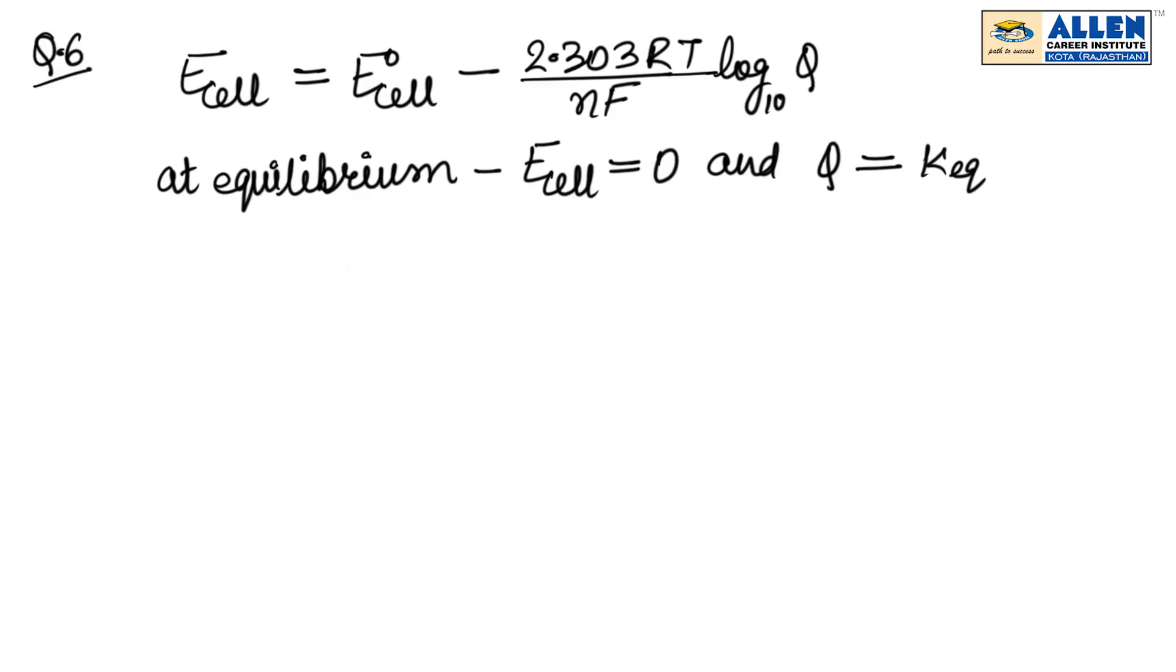If we put all these two values in Nernst equation, then we get: according to question, 2.303RT by nF is 0.059, and number of electrons involved in a cell reaction is 1. So we get this equation.